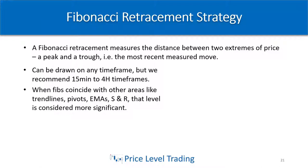Lately I've been using the 30-minute to the hourly, which seems to work best for the bigger levels. But the market is fractal, so you can use this on any timeframe. When Fibs coincide with other areas like trend lines, pivot points, exponential moving averages, or other solid support and resistance levels, that particular area is going to be more significant and have a higher probability of working.